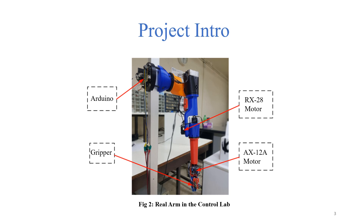The figure here shows the real arm in our control lab, which was designed by a graduate student as part of his master's thesis. There is an Arduino card performing the low-level control of the seven servo motors that control the arm's movement. At the end effector we have a gripper for grasping objects. The motors are two types: the RX-28 motors used in the first three joints, and the AX-12A motors used in the last four joints — making it a seven degrees-of-freedom redundant robot manipulator.